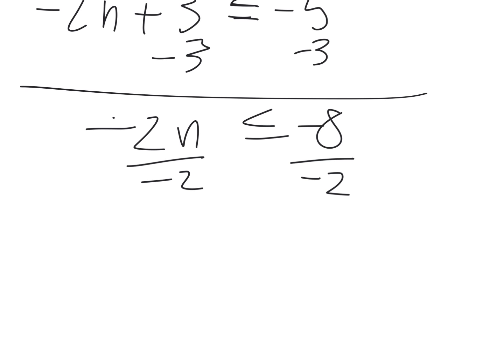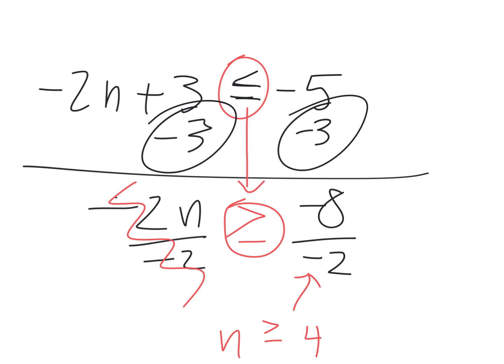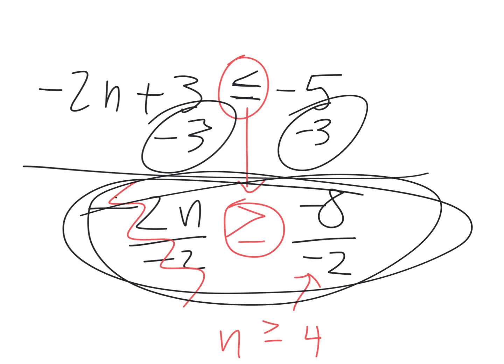The key thing, these cancel, but what's the key thing that I forgot already? When I divided by negative, what was supposed to happen? Yes, switch the sign. This was a less than, it's supposed to change to a greater than. The minute you divide by a negative, that sign switches. We're just changing it to the opposite sign. And then n is greater or equal to 4.